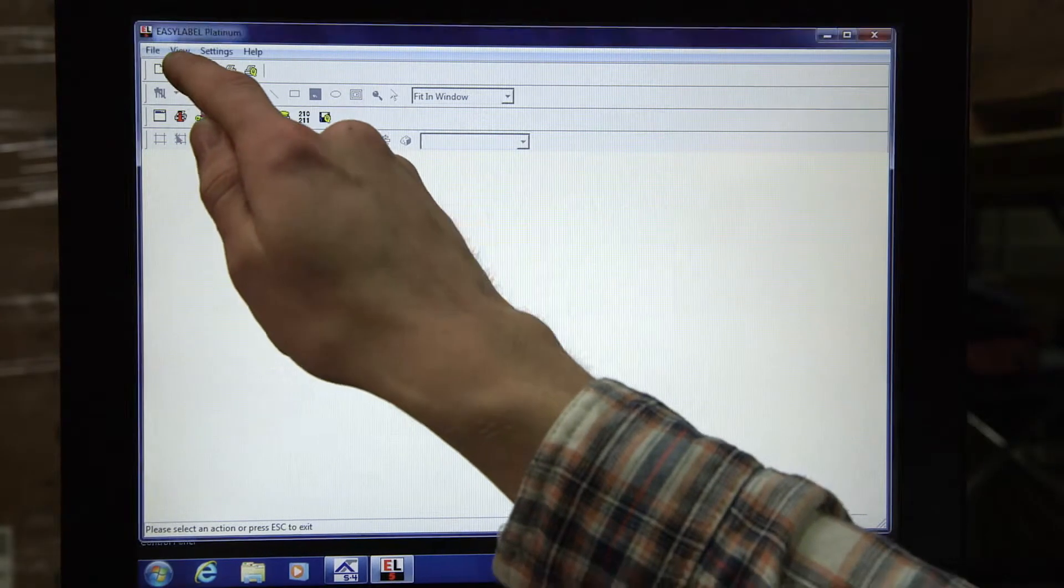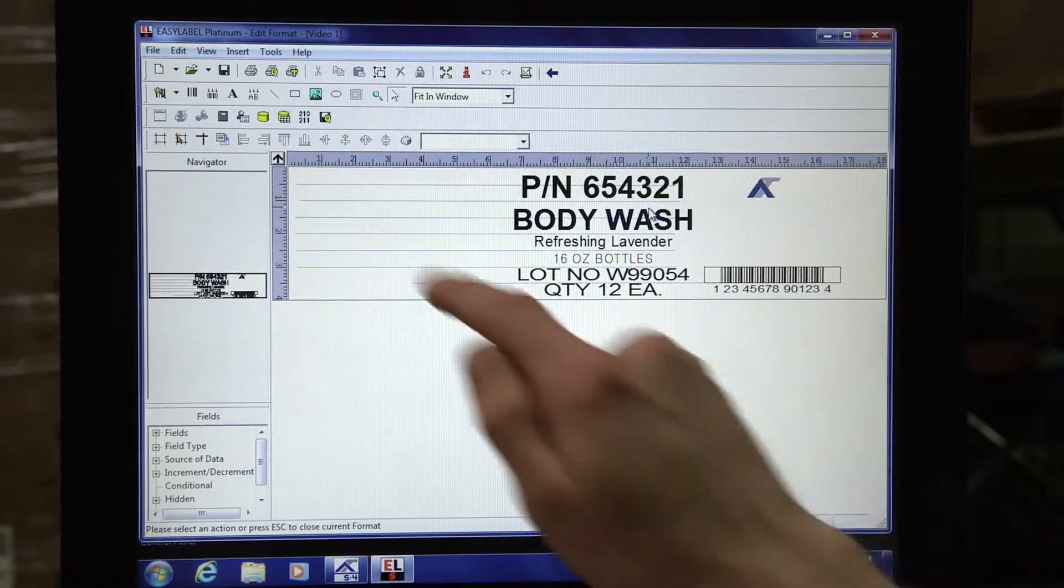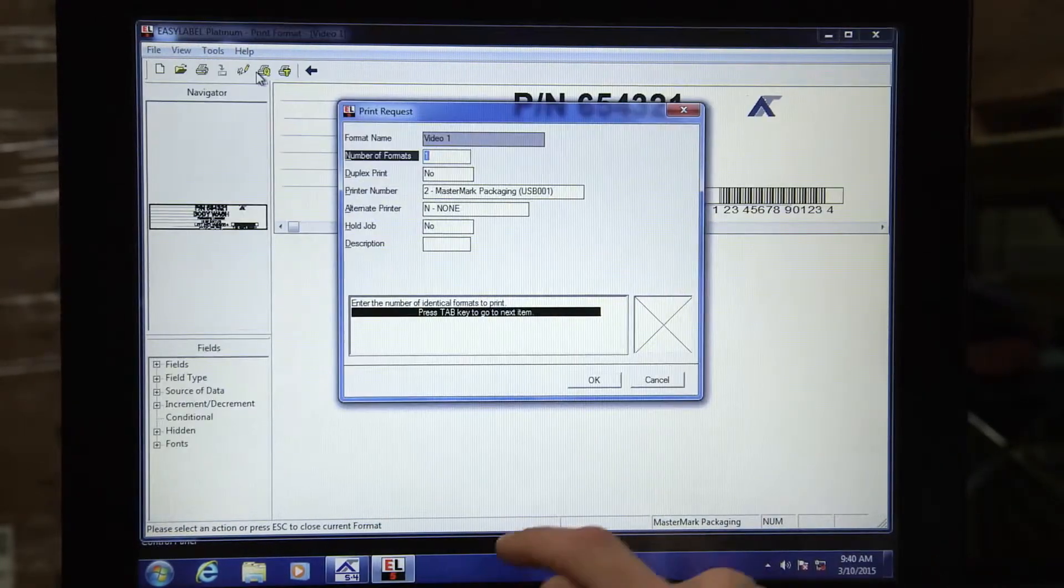EasyLabel comes standard with the Series 400 products, as it's one of the easiest-to-use barcode software packages.